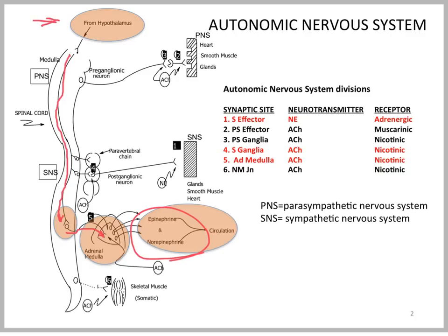These hormones — catecholamines and neurotransmitters in circulation — can then stimulate the adrenergic end effectors, which we'll discuss in more detail, where they'll have effects on glands, smooth muscle, and on the heart, for example.